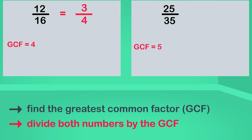Step two: divide the numerator and the denominator by the greatest common factor. Five is the largest common factor. Twenty-five divided by five is five. Thirty-five divided by five is seven. Twenty-five thirty-fifths reduced to its simplest form is five-sevenths.